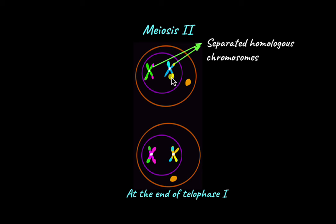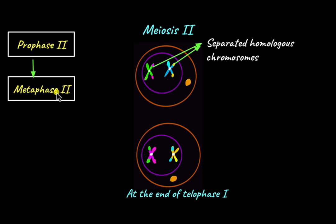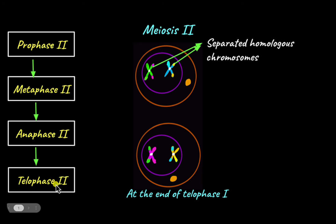So when the cell decides to undergo meiosis 2, it goes through four stages, and the four stages are named similar to the stages in meiosis 1. The first stage in meiosis 2 is prophase 2, which is followed by metaphase 2, which is then followed by anaphase 2 and then telophase 2. At the end of telophase 2, cytokinesis occurs which results in the formation of four haploid cells.